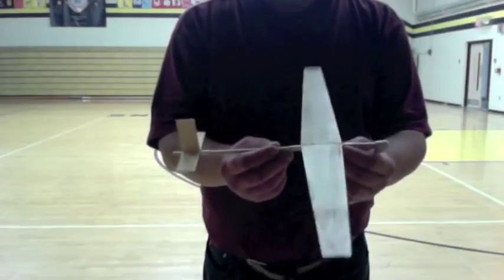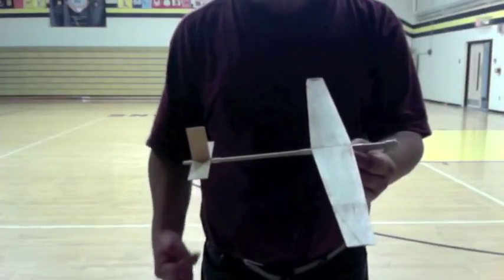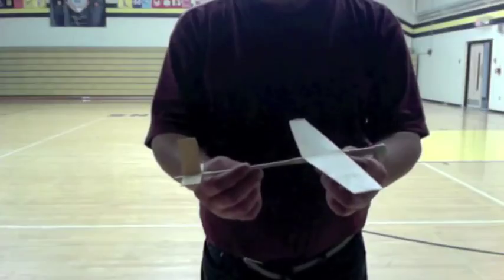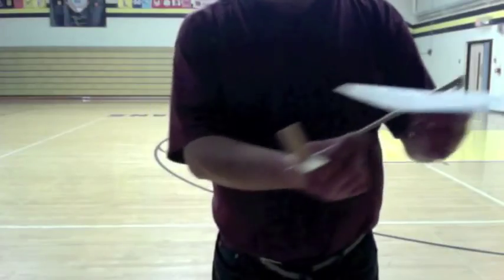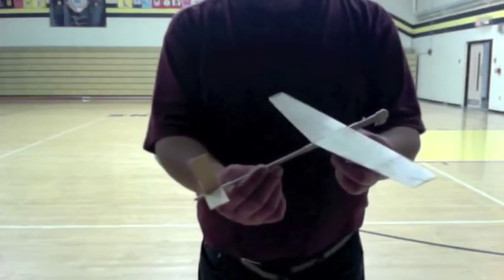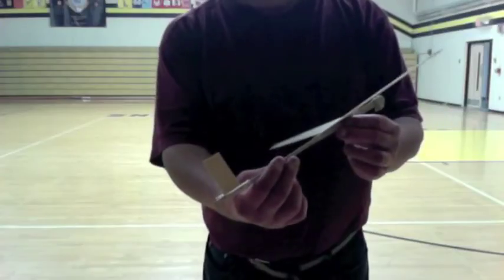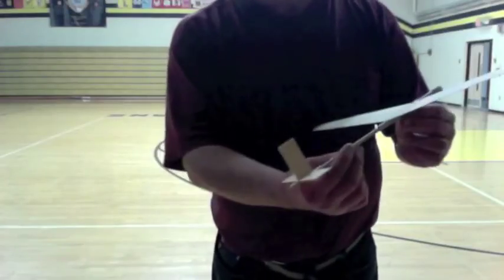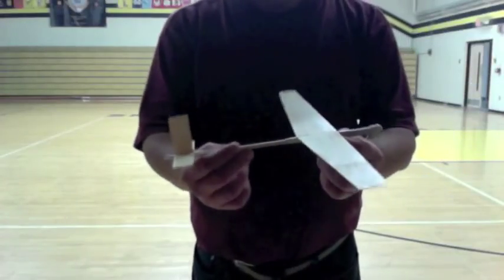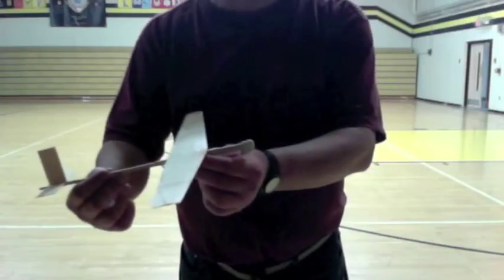Now, when we launch these planes, we have control over three of those seven things. We can control the pitch that we shoot the airplane up at. We can control the amount of roll one way or another when we launch it. And we can control the thrust by how far we pull back the rubber band.